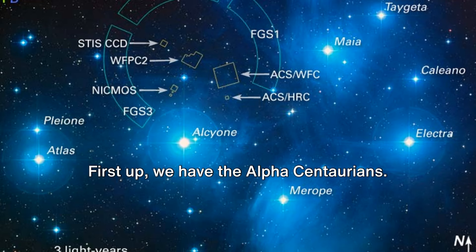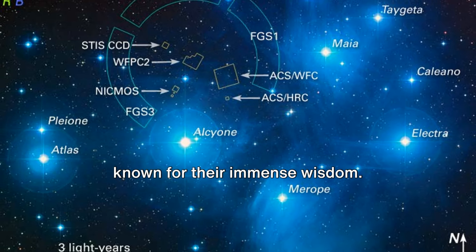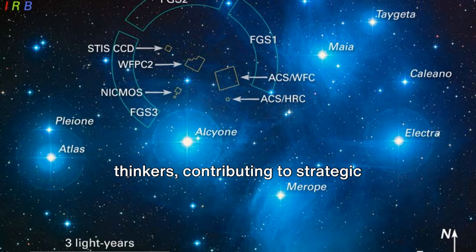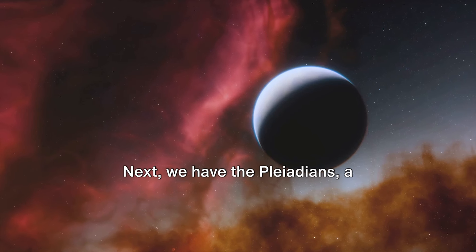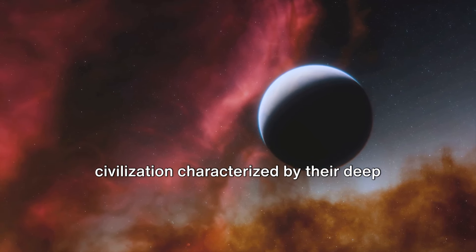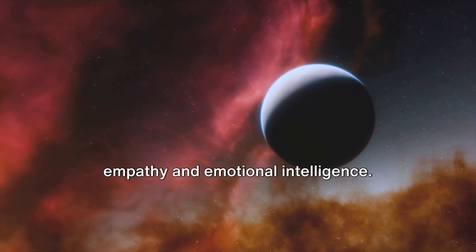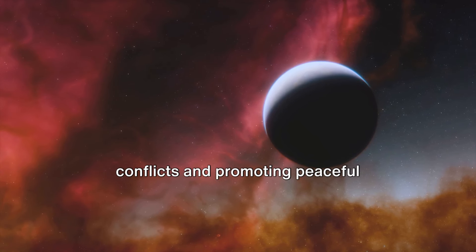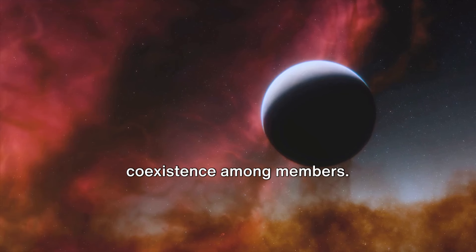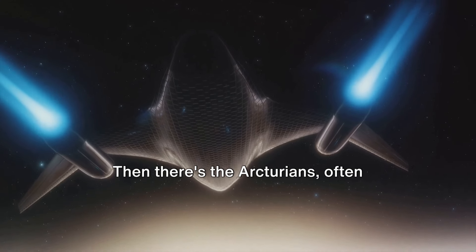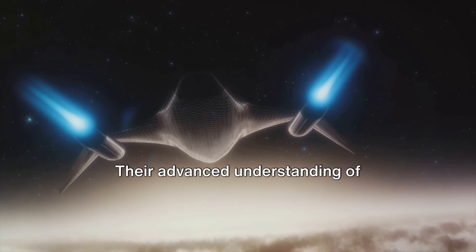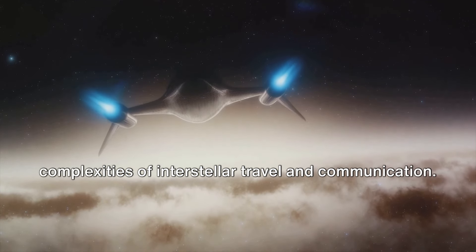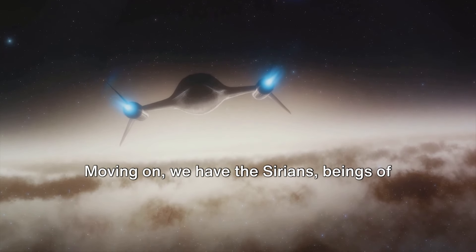First up, we have the Alpha Centaurians. These are highly intellectual beings known for their immense wisdom. They function as the philosophers and thinkers contributing to strategic planning and decision-making processes. Next, we have the Pleiadians, a civilization characterized by their deep empathy and emotional intelligence. They serve as diplomats and mediators within the federation, smoothing out conflicts and promoting peaceful coexistence among members. Then there's the Arcturians, often described as the technological wizards. Their advanced understanding of technology and science helps the federation navigate through the complexities of interstellar travel and communication.